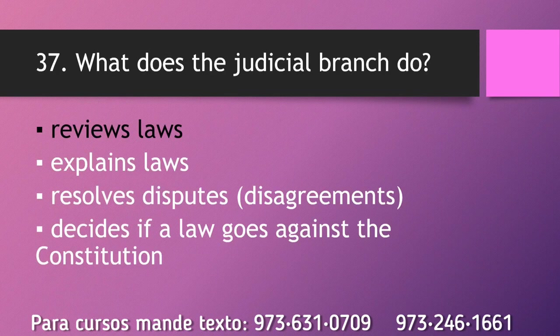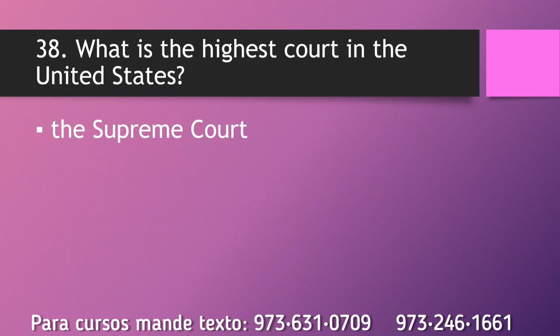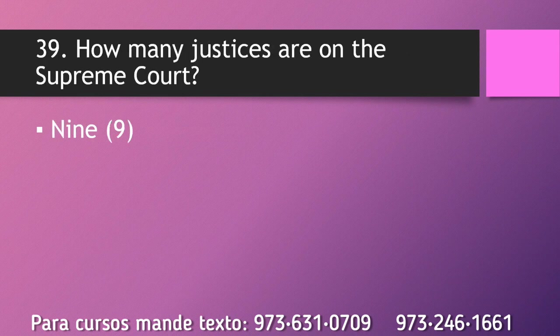What does the judicial branch do? Reviews laws. What is the highest court in the United States? The Supreme Court. How many justices are on the Supreme Court? Nine.